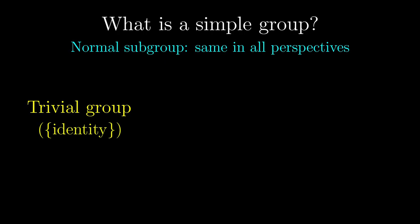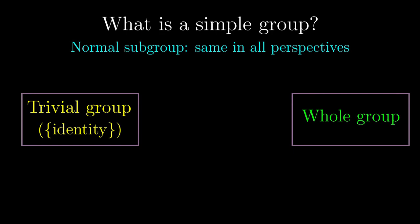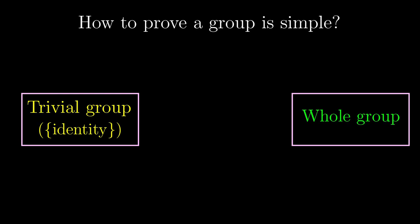First, let's recall what it means for a group to be simple. Any group has at least 2 normal subgroups, namely the trivial group, which we have been calling the identity set throughout this series, and the whole group. If these two are the only normal subgroups, we call it simple.